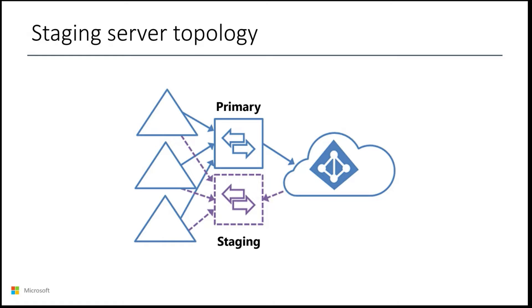You must have at least one staging server to run this topology. Only one server can act as primary. However, Azure AD Connect does support the installation of multiple staging servers that can be deployed through different data center locations.